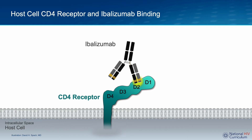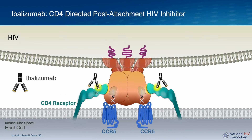For this reason, ibalizumab binding does not block the T cell immune response — it does not interfere with CD4 immune function or cause any degree of immune suppression. In addition, binding of ibalizumab to the CD4 receptor occurs after GP120 has attached, which is why it is sometimes referred to as a post-attachment inhibitor. Ibalizumab binds to the D2 region of the CD4 receptor and this prevents the conformational changes of the CD4 receptor-GP120 complex that are necessary for interaction with the CCR5 or CXCR4 co-receptors, thereby blocking HIV fusion and entry.